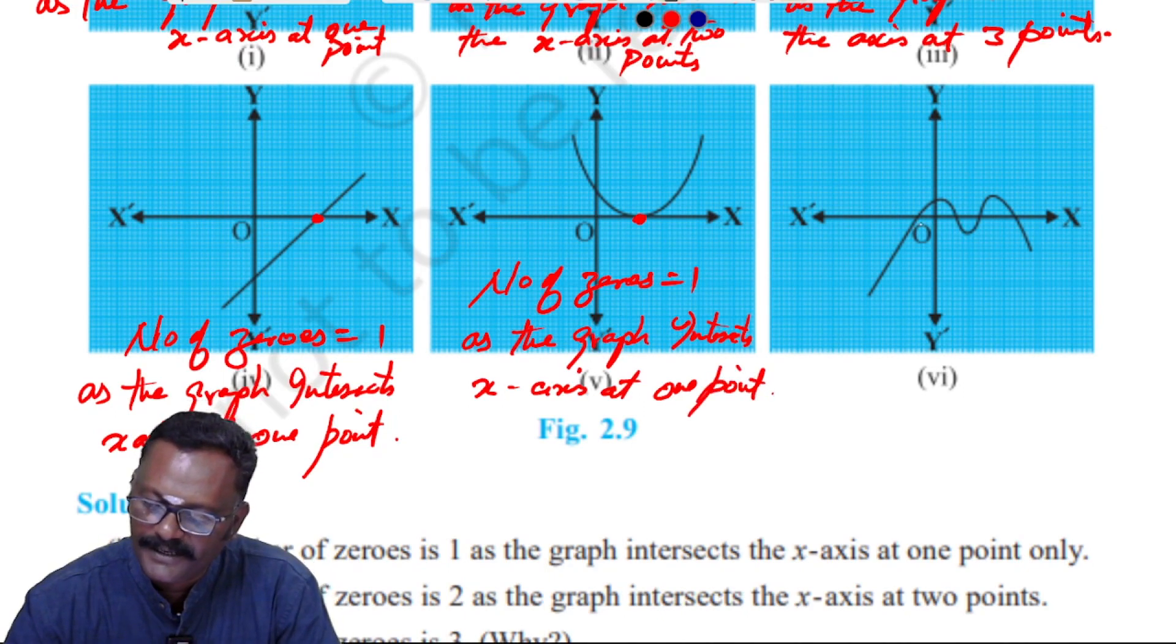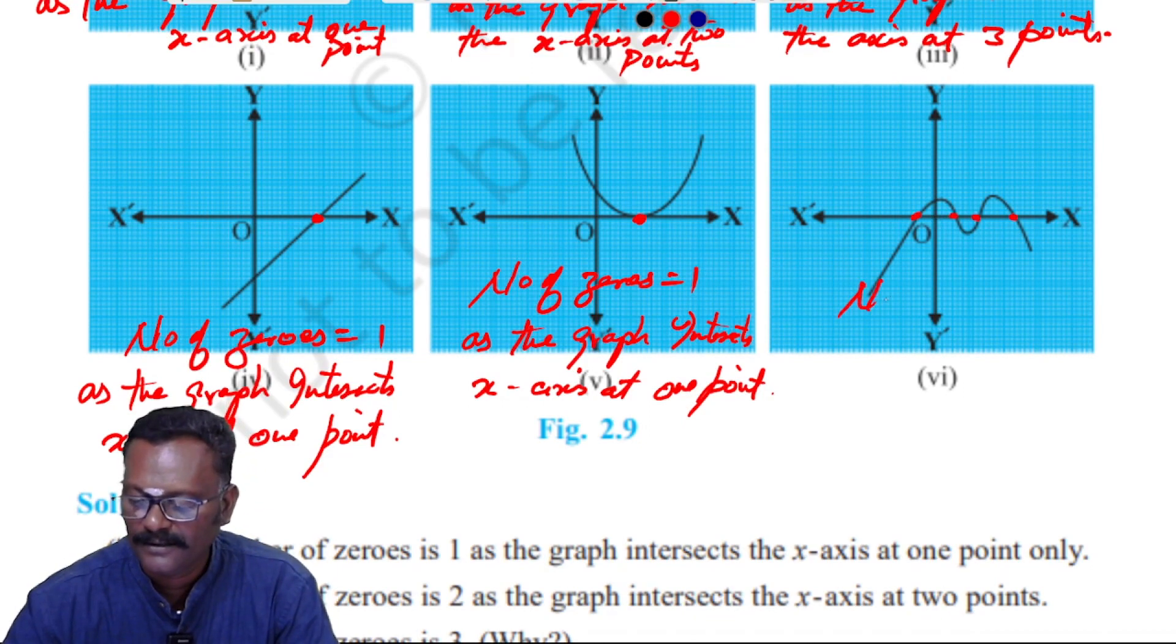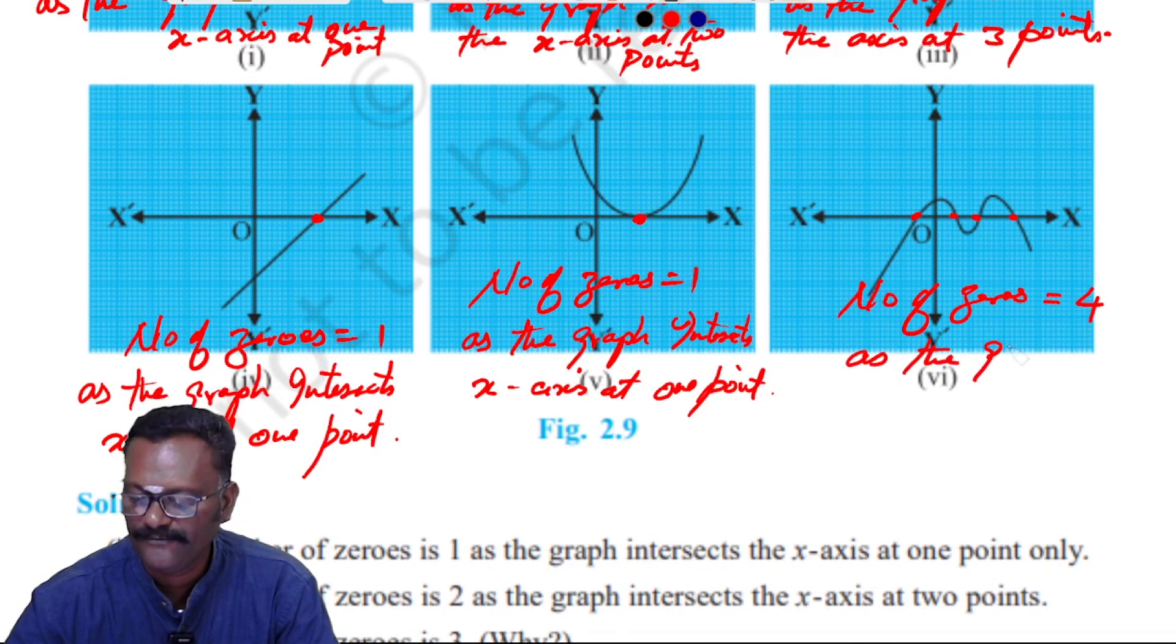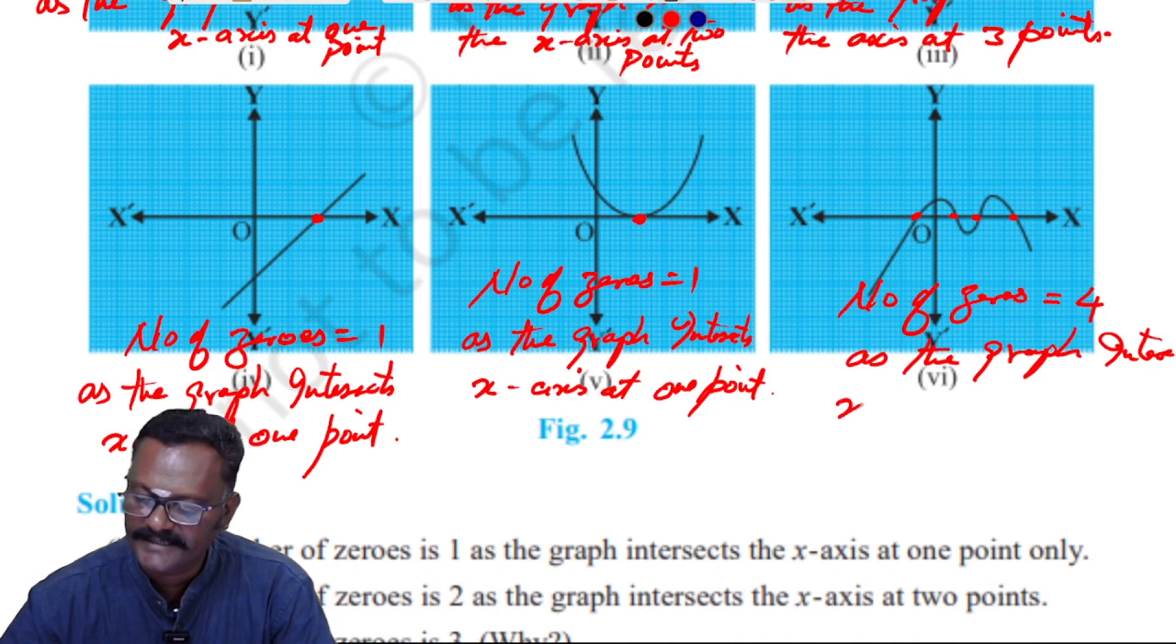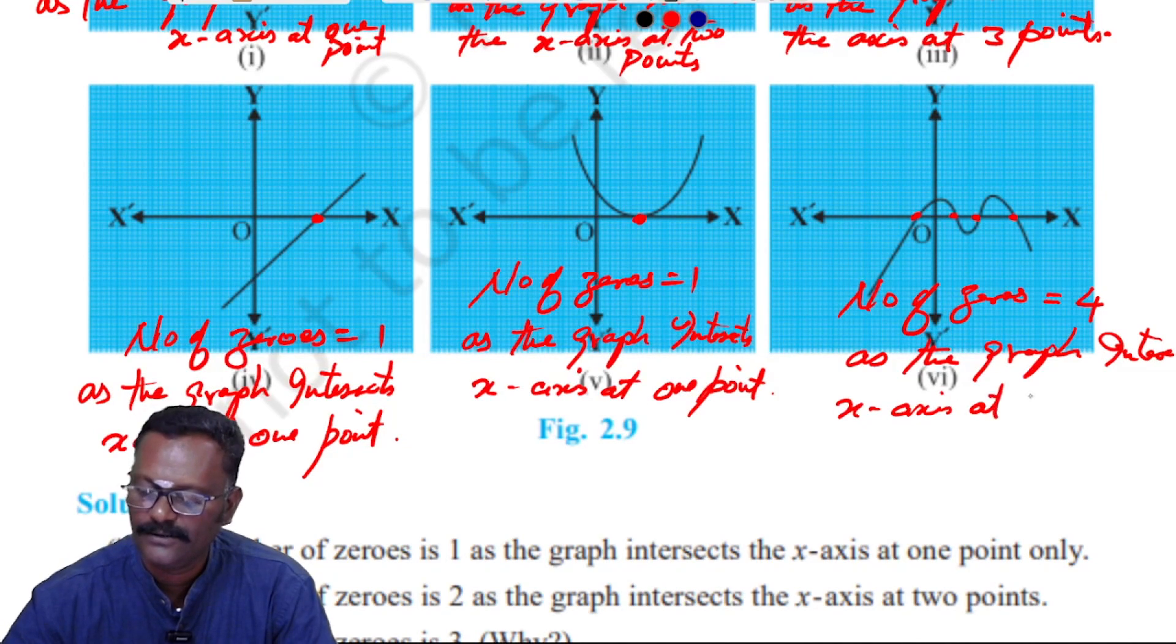Given the pattern, for graph 1, 2, 3, 4, the number of zeros is equal to 4, as the graph intersects the x-axis at four points.